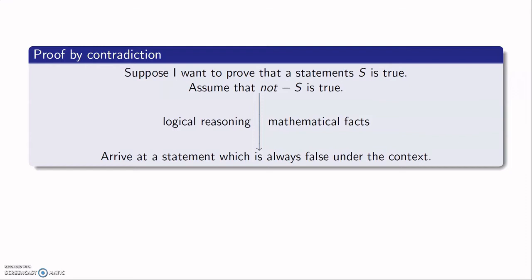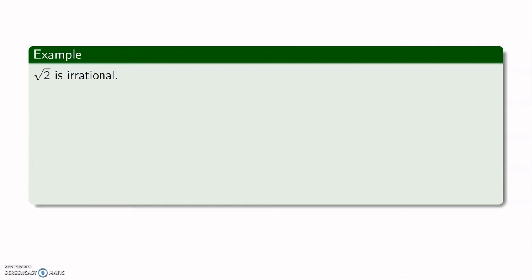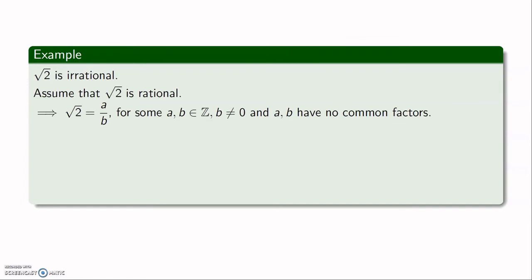And hence statement S is true. Let's prove that √2 is irrational. I'll assume that √2 is rational. If √2 is rational, I can write √2 = a/b, where a and b are integers, b ≠ 0, and a and b have no common factors. Cross-multiplying gives a = b√2. Squaring both sides gives a² = 2b².